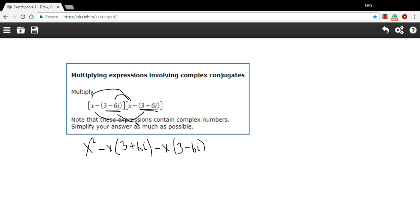And then the last terms, these two together, and we'll just write them like this. It's a negative times a negative, so it's going to be a positive 3 plus 6i times 3 minus 6i. Okay, we've got a lot more simplifying to do, but that's the first step. We've just basically foiled this.